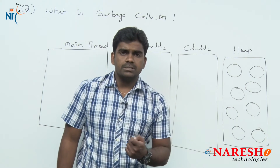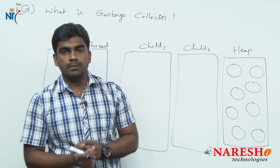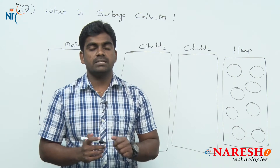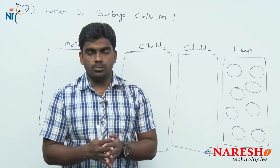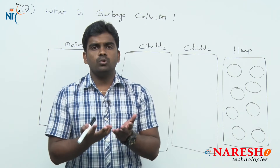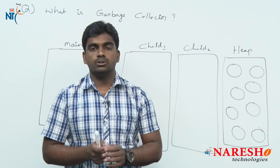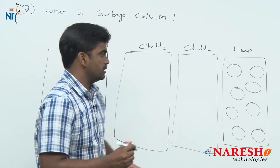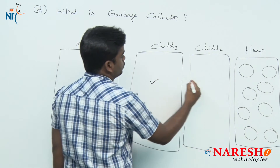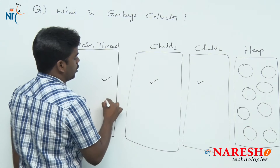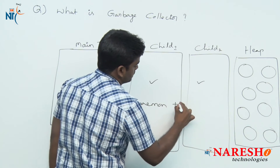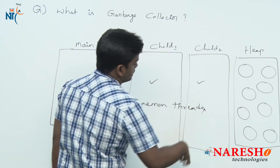The garbage collector thread is a daemon thread. A daemon thread is a service thread — it provides service to all the non-daemon threads such as the main thread and child threads.